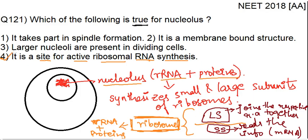Let's see the other options as well. Option 2 says it is a membrane bound structure — no, it is not a membrane bound structure. It is present inside the nucleus. This red part is known as nucleolus, and it is not surrounded by a specific membrane. So it is not a membrane bound structure.